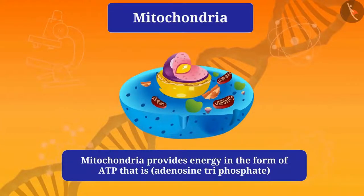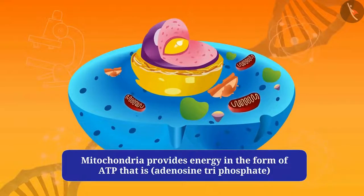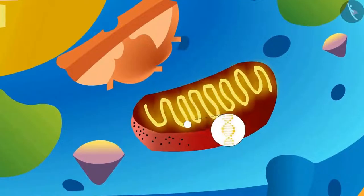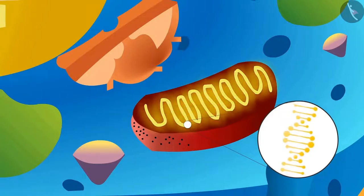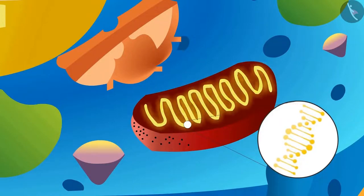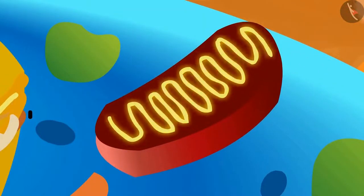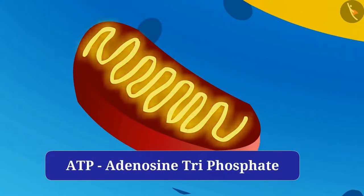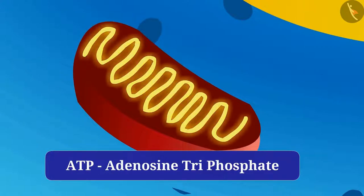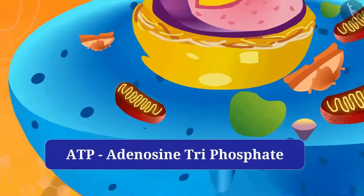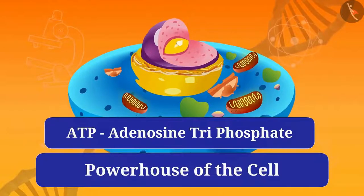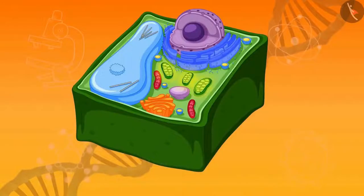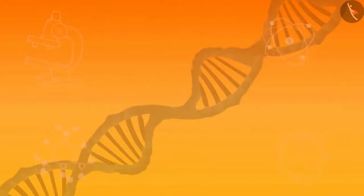The cell gets energy to perform its essential functions from mitochondria. Mitochondria have their own DNA and ribosomes that can make proteins and energy in their inner membranes. Mitochondria provide energy in the form of ATP — adenosine triphosphate — to the cell to perform the necessary chemical reactions. For this reason, it is also called the powerhouse of the cell.